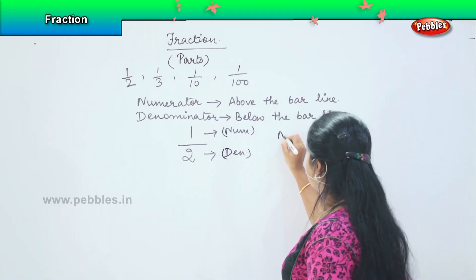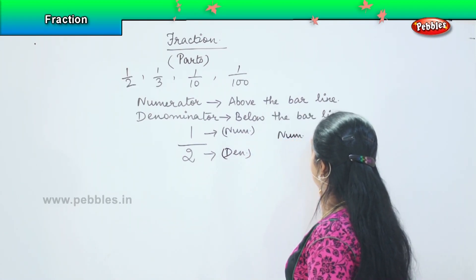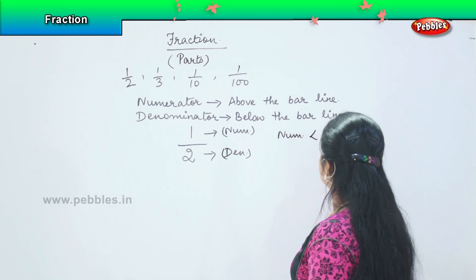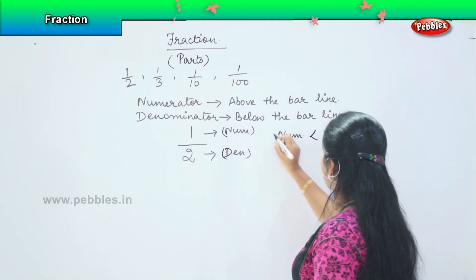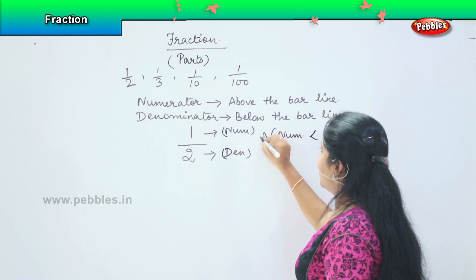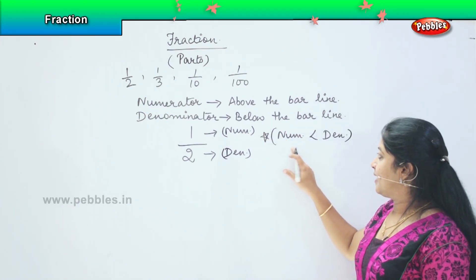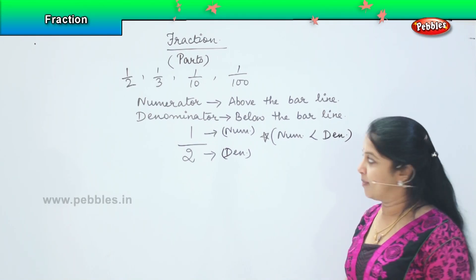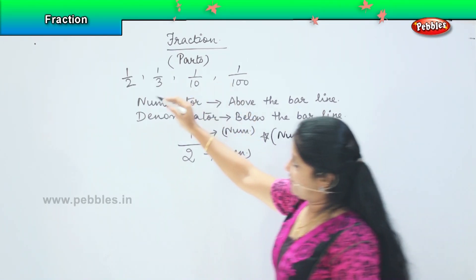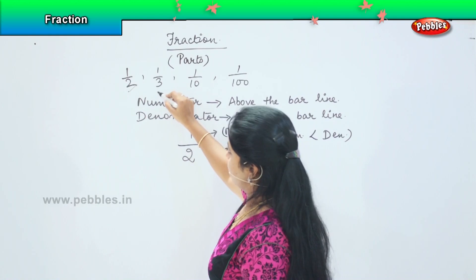Usually numerator will always be lesser than denominator. This is the basic rule of fraction. So numerator will always be less than the denominator. In these examples, if we say 1/2, 1/3, 1/10, 1/100, in all the four cases my denominator is greater than numerator, right?